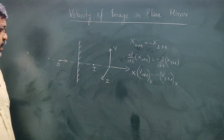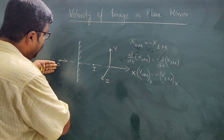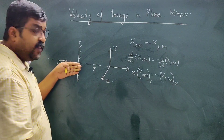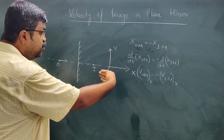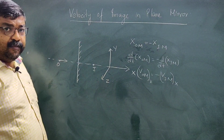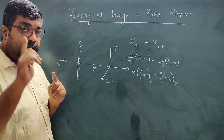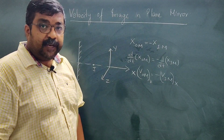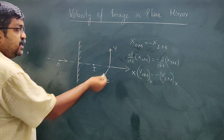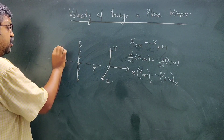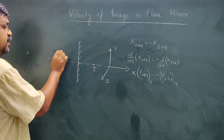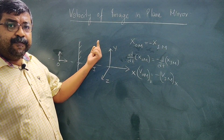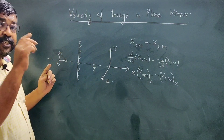The axis is important. If the object moves toward the mirror along the positive x-axis, the image moves in the negative x-axis direction — so the direction is opposite. But if the object's velocity is along the y-axis, meaning the object moves upward, then the image also moves upward in the same direction.